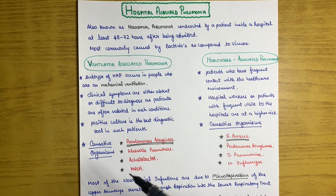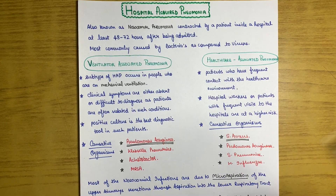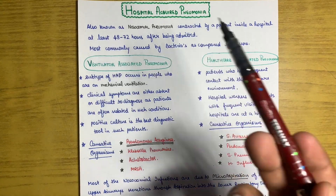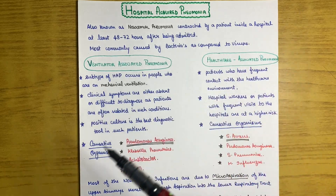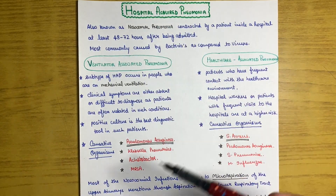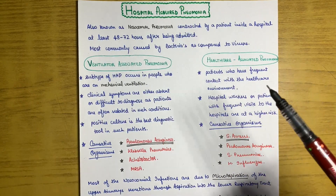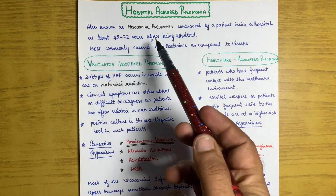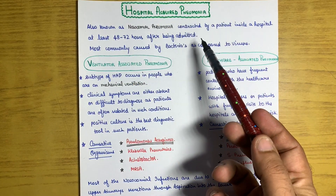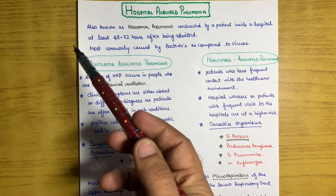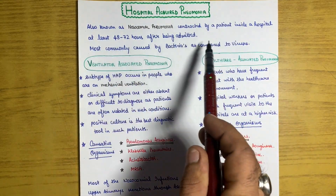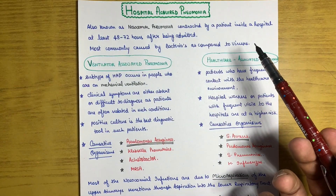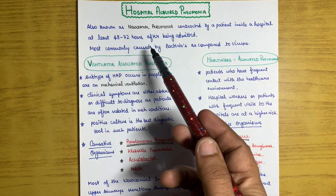In this video we are going to talk about hospital-acquired pneumonia, another type of pneumonia. As the name suggests, it is acquired from the hospital or inside healthcare facilities. It is also known as nosocomial pneumonia. It is contracted by a patient inside a hospital at least 48 to 72 hours after being admitted — this is the key diagnostic criteria.